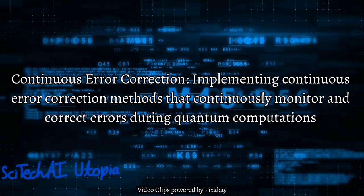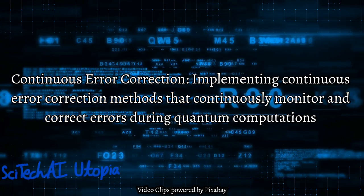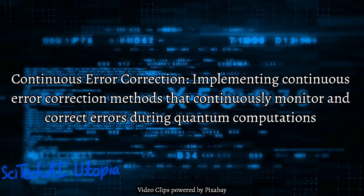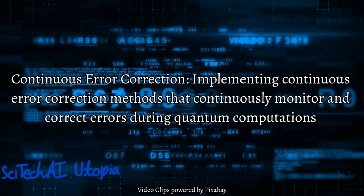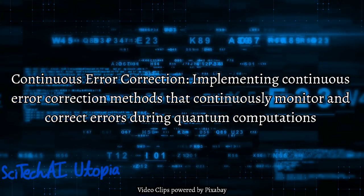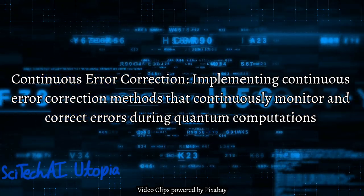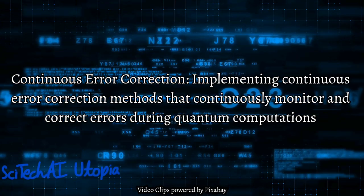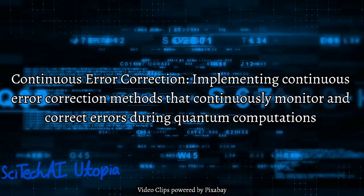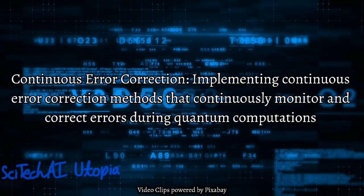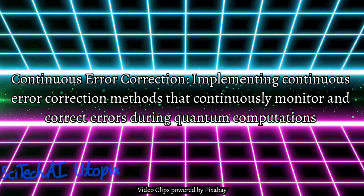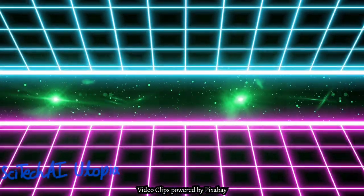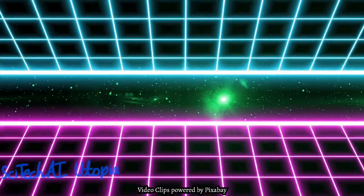Solution 36: Continuous Error Correction. Continuous error correction involves real-time monitoring and correction of errors during quantum computations. This approach aims to address the dynamic nature of decoherence, actively adjusting quantum operations to counteract evolving error conditions and maintain the fidelity of quantum information.